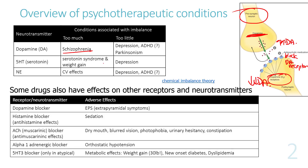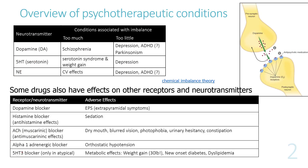In conditions like depression, associated with too little dopamine, 5-HT, and norepinephrine, the drugs given increase the amount of these neurotransmitters in the synaptic cleft. These neurotransmitters — dopamine, norepinephrine, and 5-HT — are considered monoamines.